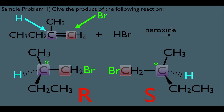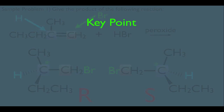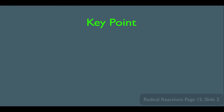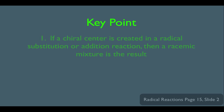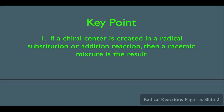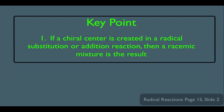To summarize what we've learned: there is really only one key point — if a chiral center is created in a radical substitution or addition reaction, then a racemic mixture is the result.